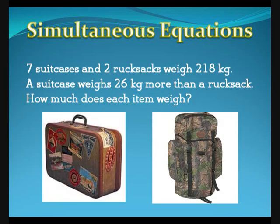Seven suitcases and two rucksacks weigh 218 kilograms. A suitcase weighs 26 kilograms more than a rucksack. We shall assume that all the suitcases weigh the same, as do all the rucksacks. How much does each item weigh?